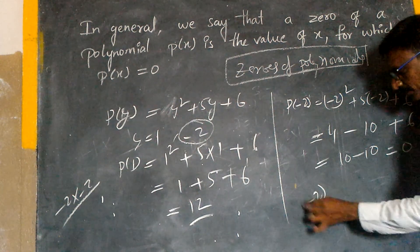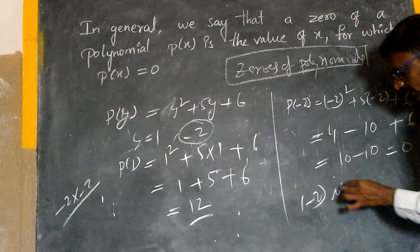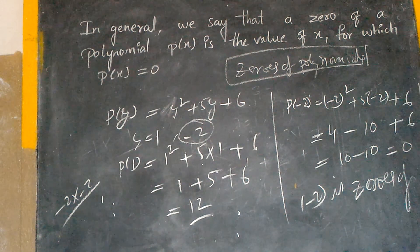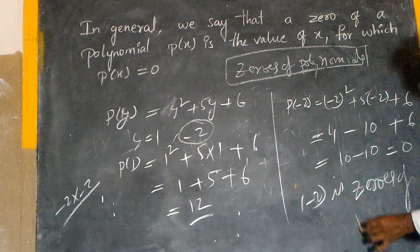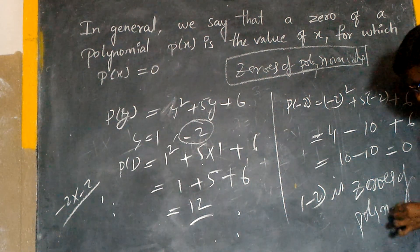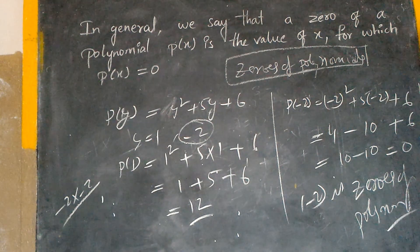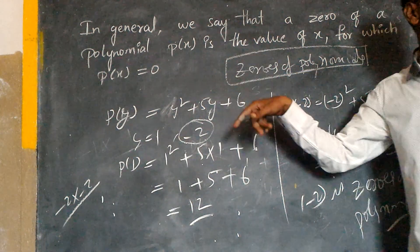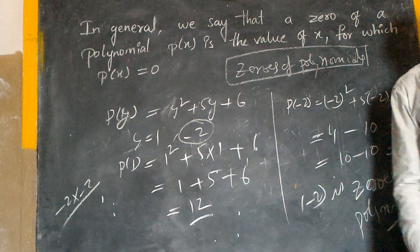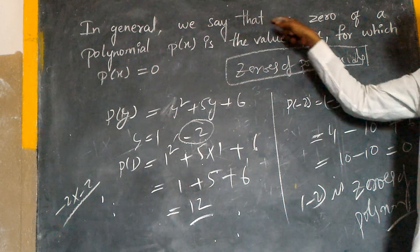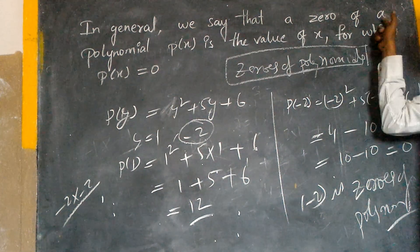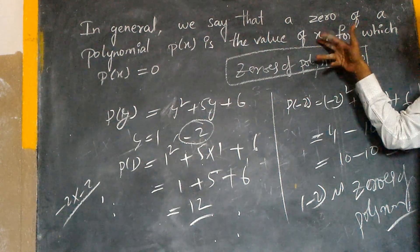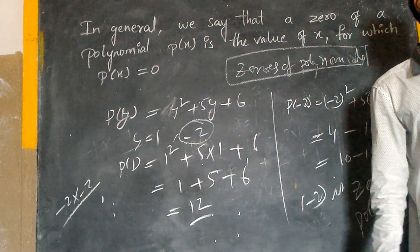Minus two is a zero of the polynomial. So, in general, we can say that the zero of the polynomial p of x is the value of x for which p of x is equal to zero.